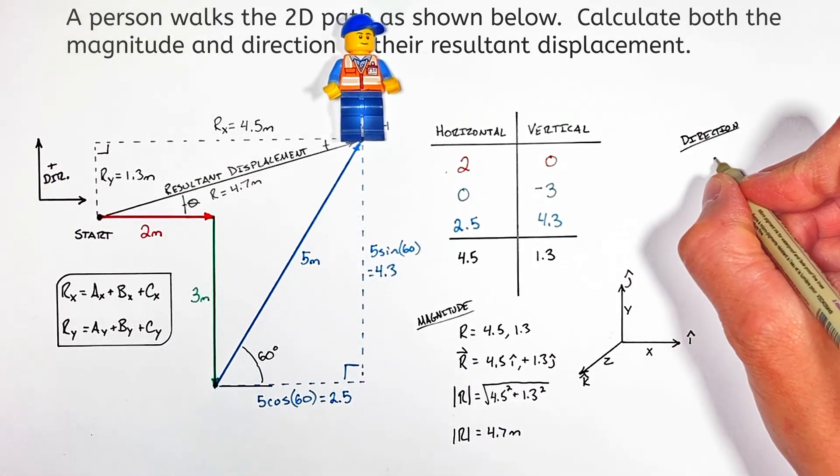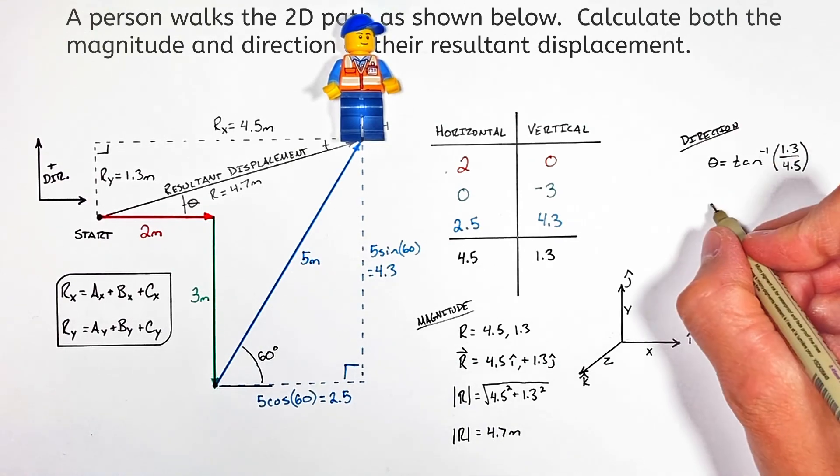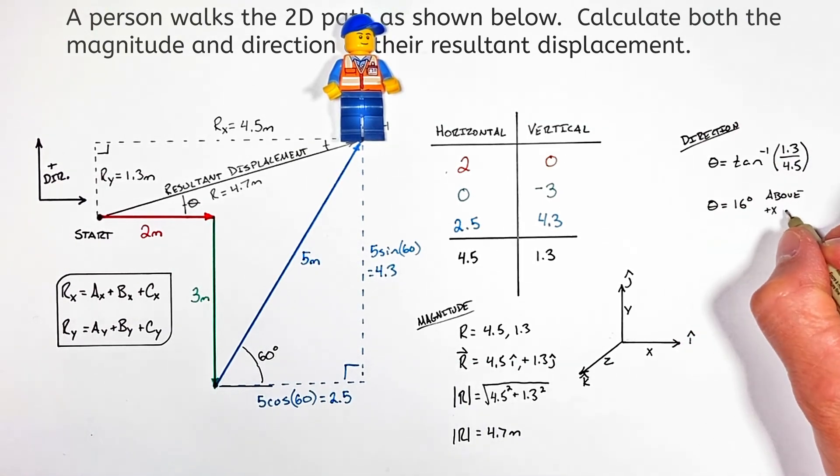You can use whatever trig function you want—I'm going to use tangent because it's the best. Plugging in our values, we find the resultant displacement is 16 degrees above the positive x axis.